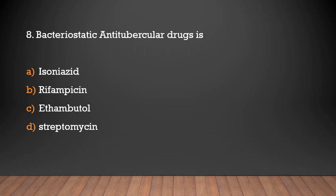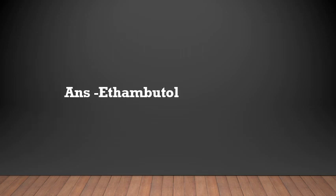Which of the following is a bacteriostatic anti-tubercular drug? Isoniazid, Rifamycin, Ethambutol, or Streptomycin? Answer: Ethambutol. Ethambutol is the bacteriostatic anti-tubercular drug. Bacteriostatic means agents that prevent the growth of bacteria; the rest are bactericidal.